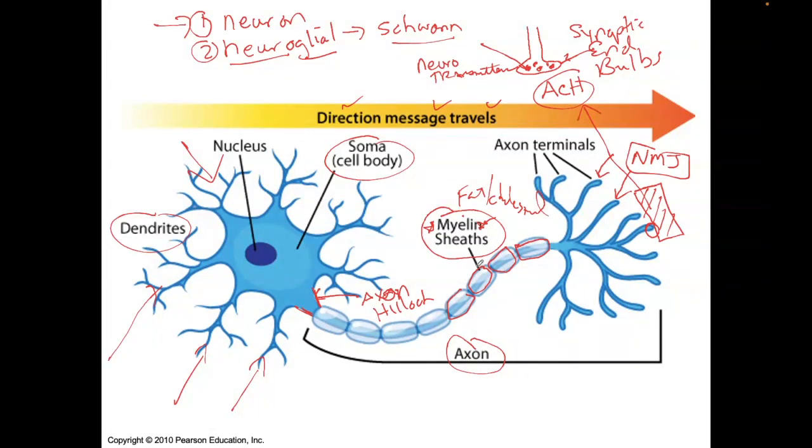Now, we need the myelin to create fast, rapid forms of communication of electrical conduction. But there is an autoimmune condition in which your body can attack the Schwann cells so that you can't produce myelin. That disease is called MS, multiple sclerosis. When you don't have the myelin sheath, the conduction of the electrical current is decreased.